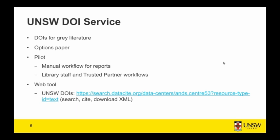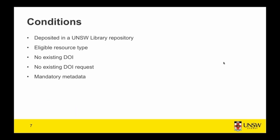In the latter half of last year we presented an options paper to the library and went ahead with a pilot, which involved a manual workflow for reports to start with. We had workflows for both library staff and trusted partners to mint DOIs, then moved on to implement a web tool. At the link on your screen you can look at the DOIs minted by that service — we now have about 330 DOIs minted for grey literature.